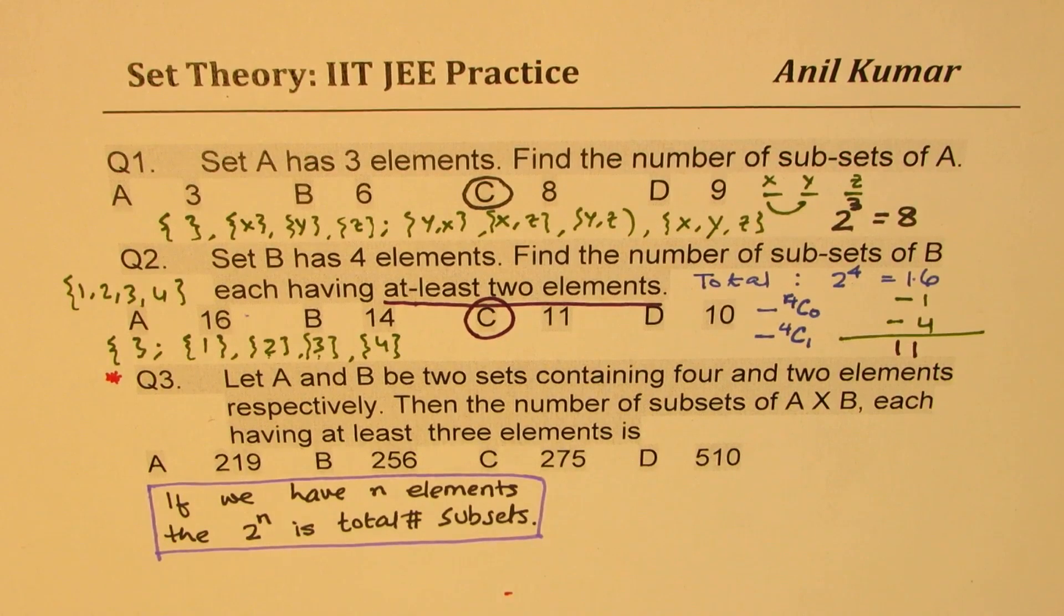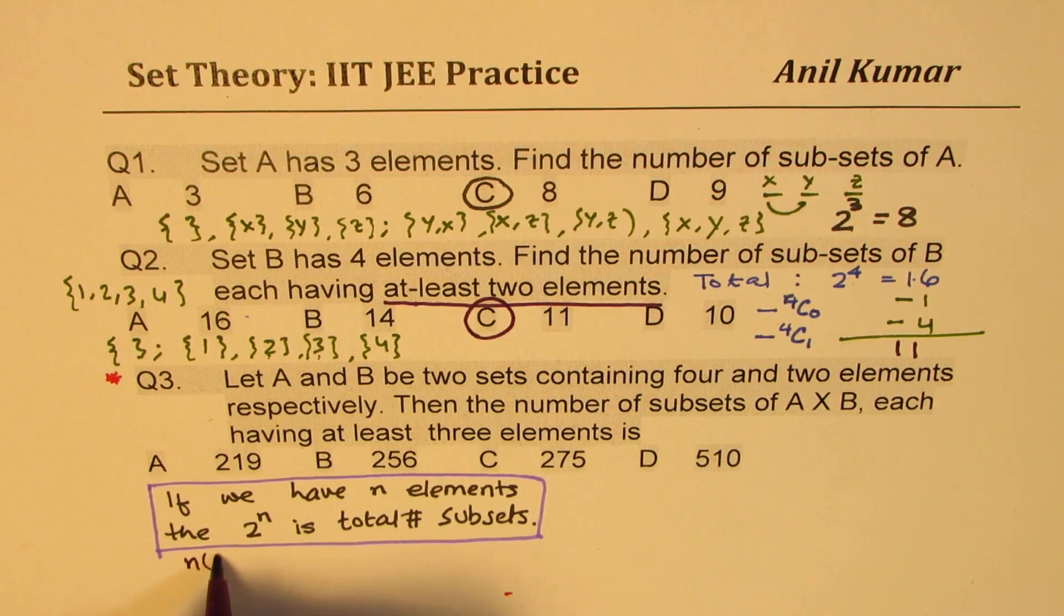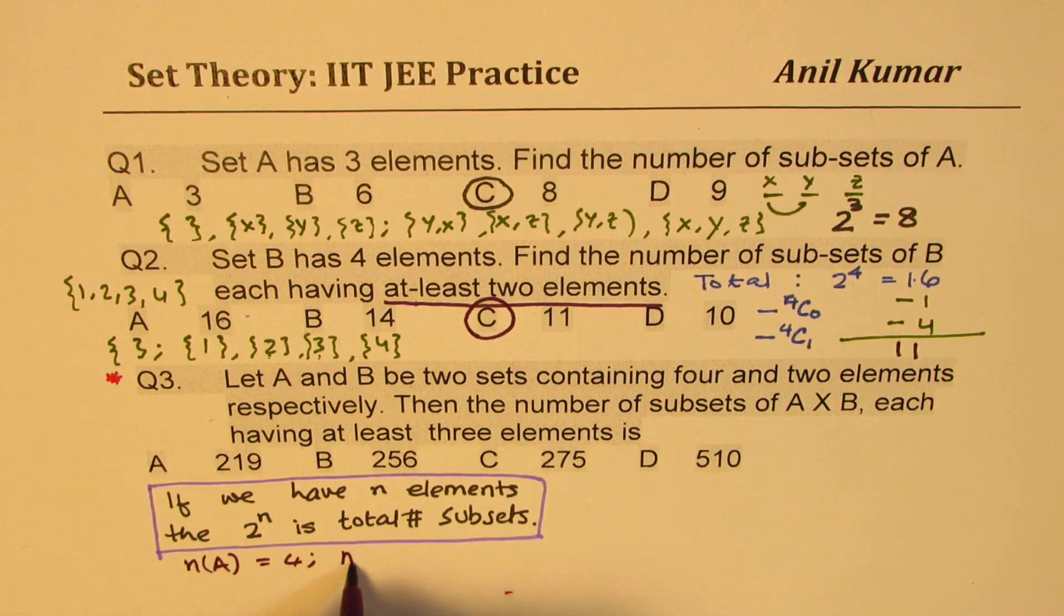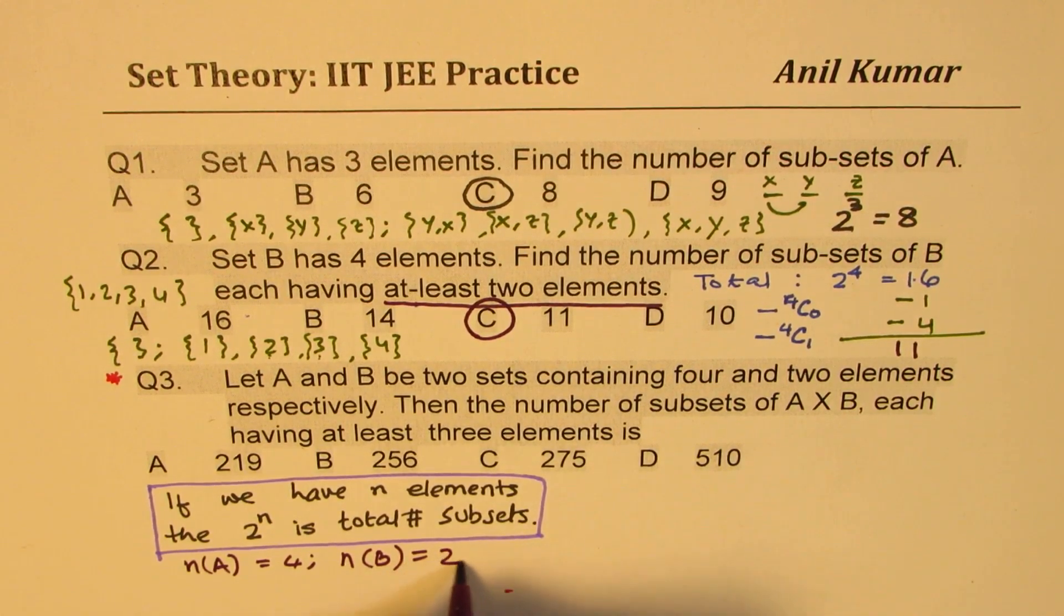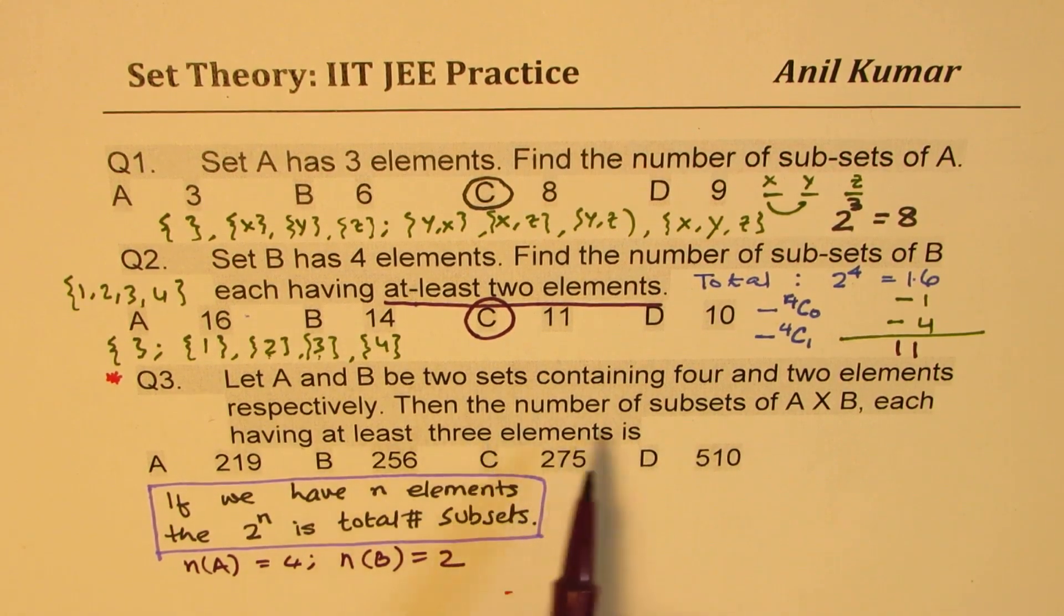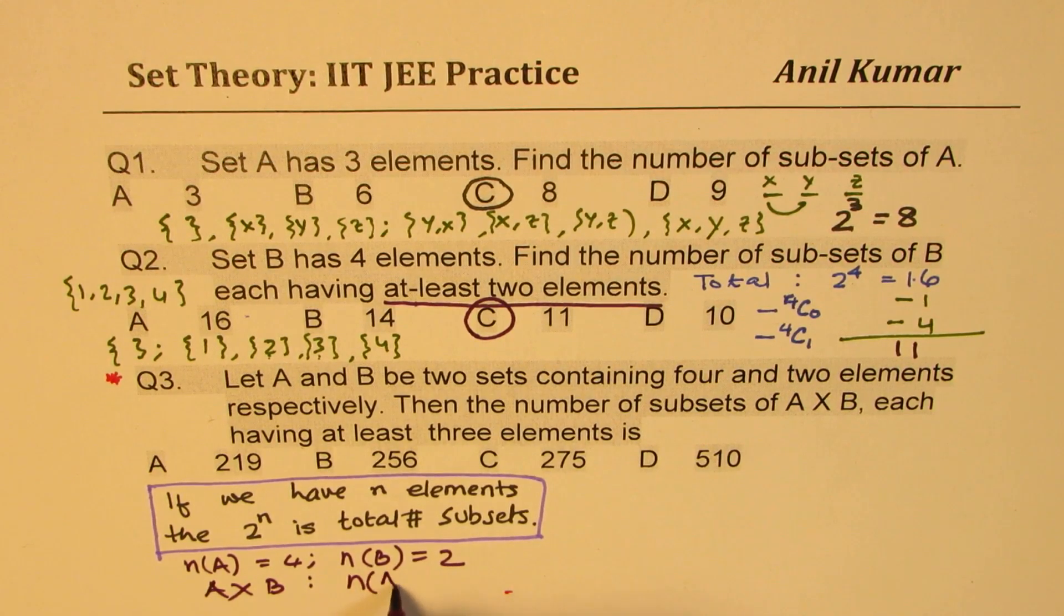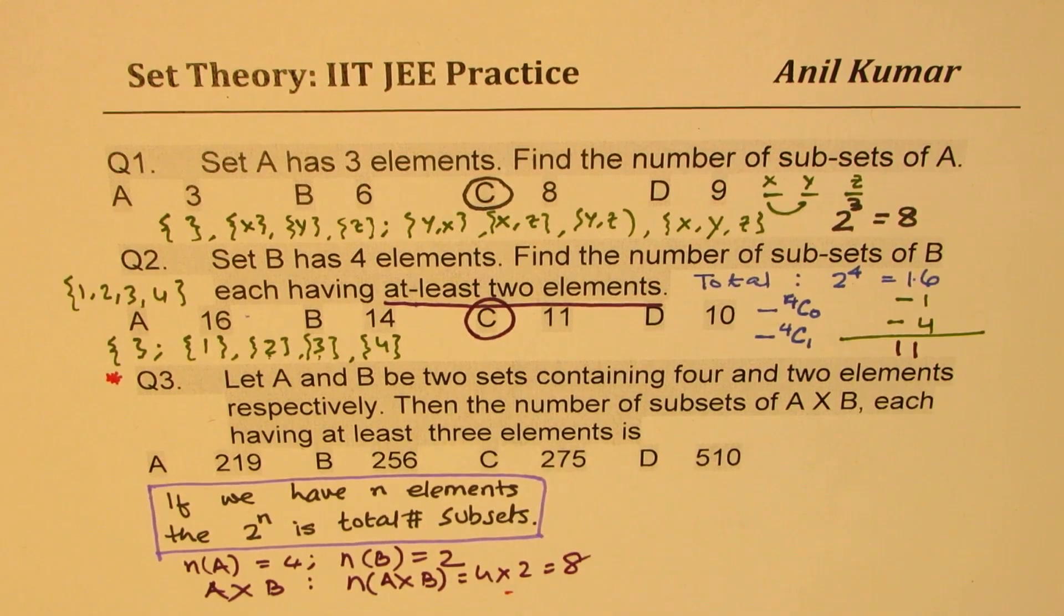Now let's look into the third question, which is the real question to answer. Let A and B be two sets containing four and two elements. So what we are given here is number of elements in A is 4, and number of elements in B is 2. So when I say A cross B, in that case, the number of elements will be in A cross B equal to four times two, which is eight. So now we are working with eight elements.